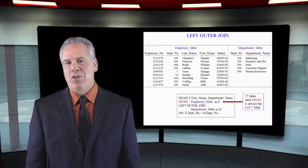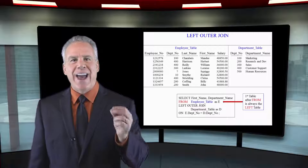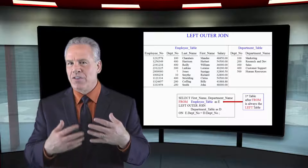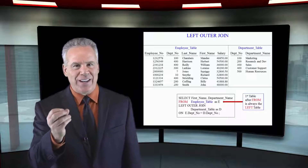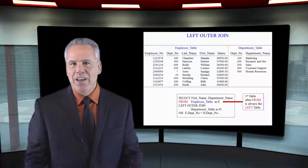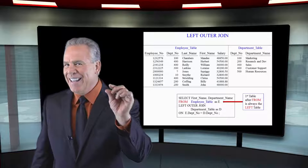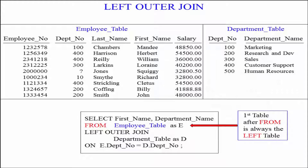This is going to be your first opportunity to see an outer join. This is actually easier than you think to understand because they're just like inner joins with just a little bit of difference. Now look at what we're doing. We're selecting the first name from the employee table — that's the only column from the employee table in the select list — and we're selecting the department name from the department table.